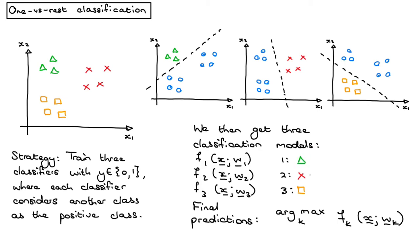You get a score for each of the three classes: the triangle, the cross, and the square class. Then what you do is simply predict the class for which the score from that model is highest.